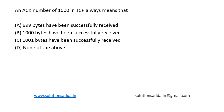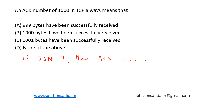There are two scenarios here since the initial sequence number is not mentioned. If the initial sequence number is equal to 1, then ACK of 1000 means that 999 bytes have been delivered.